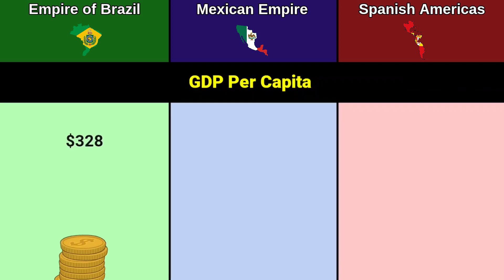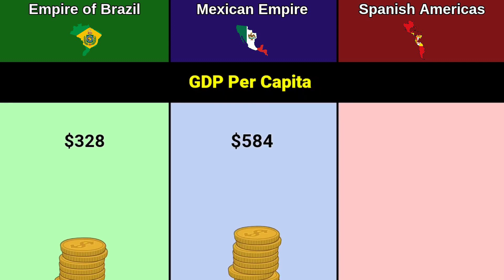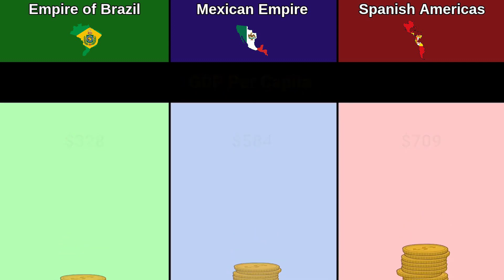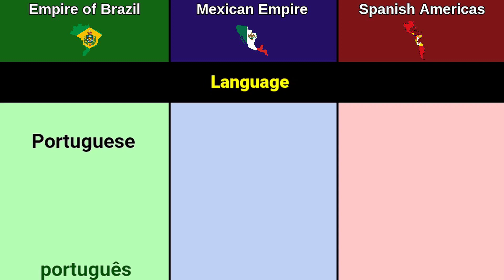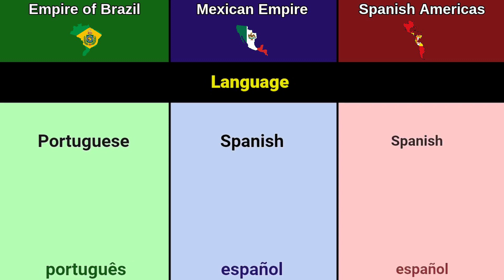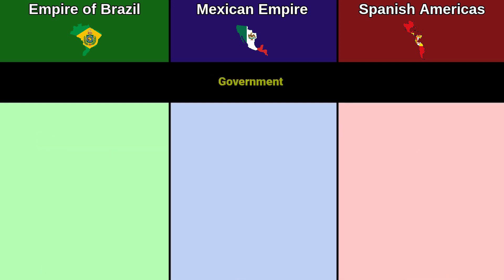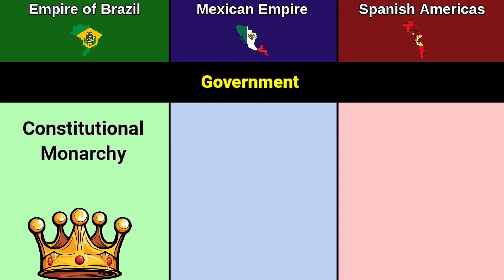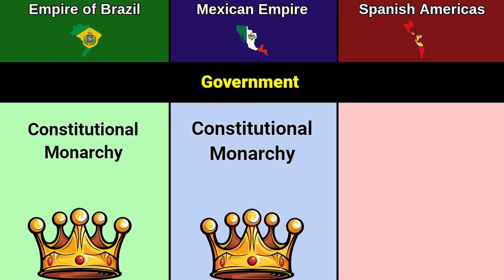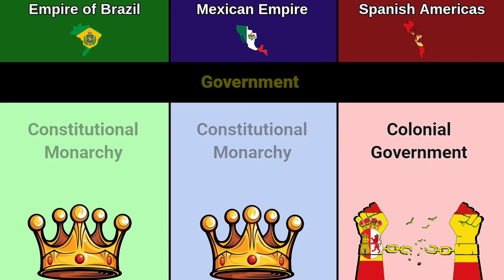GDP per capita: 328 dollars, 584 dollars, 709 dollars. Language: Portuguese, Spanish, Spanish. Government: constitutional monarchy, constitutional monarchy, colonial government.